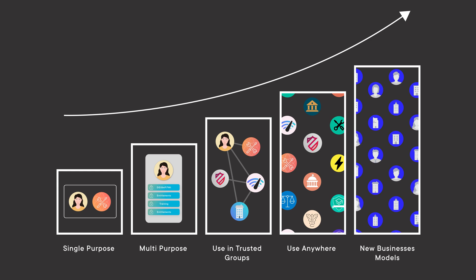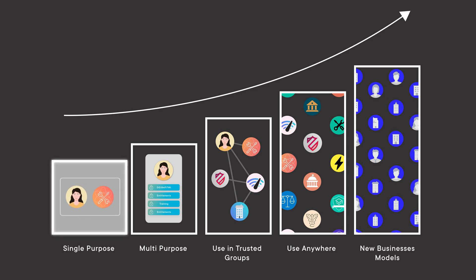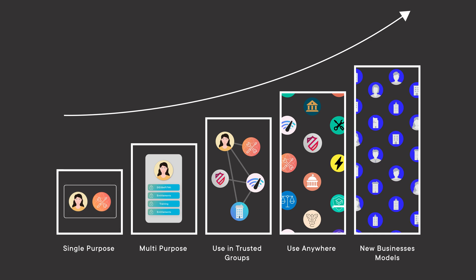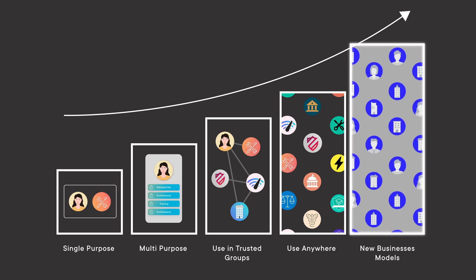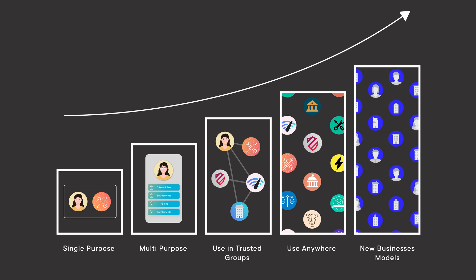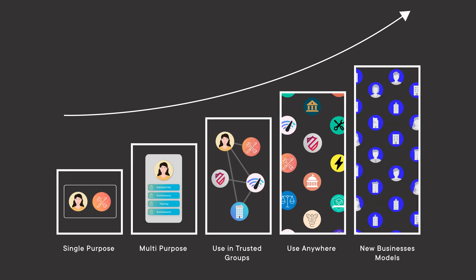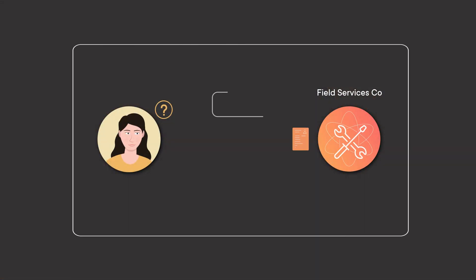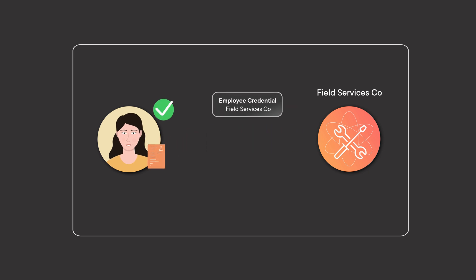Now that we've introduced those two technical concepts, let's look at how the value shows up for a business. On the left we have single purpose — where credentials might be used in a passwordless logon type flow with a very specific point-solution use case. On the far right, we have a whole new exponential trust ecosystem where entirely new business models are available. Because this technology is so extensible and modular, you can adopt it incrementally. So first, single purpose: Emma's organisation, Field Services Company, can issue a very basic employee credential to Emma and she could use it just to log into one system — an immediate point solution giving some benefits straight away.